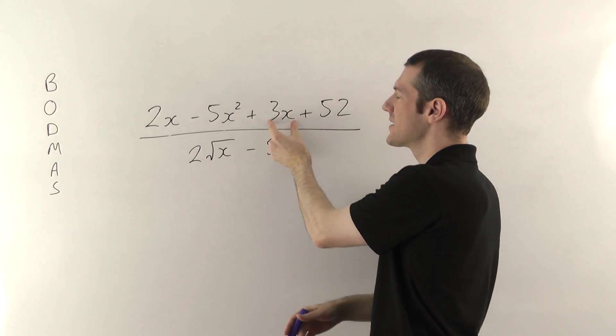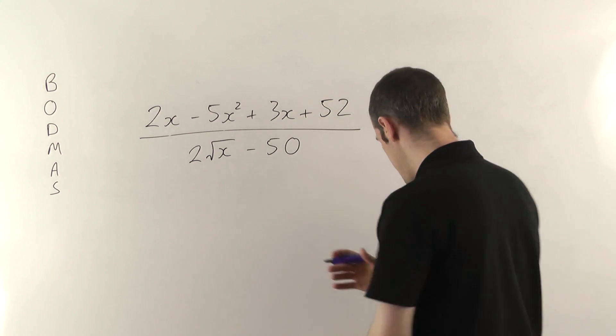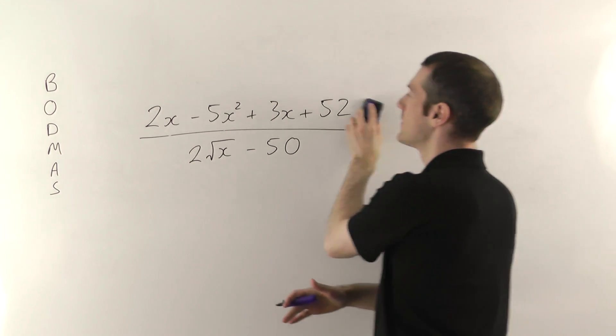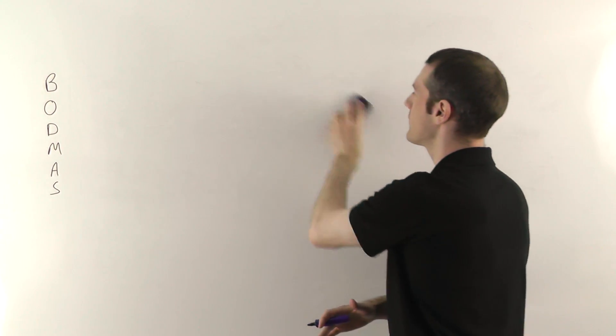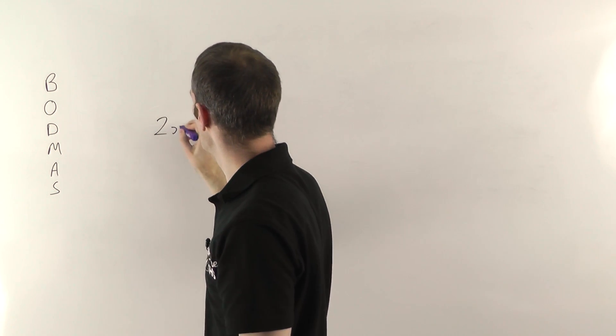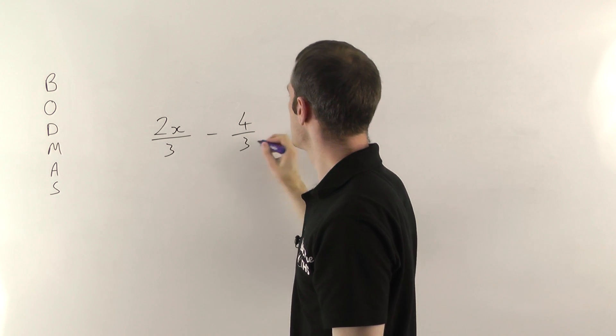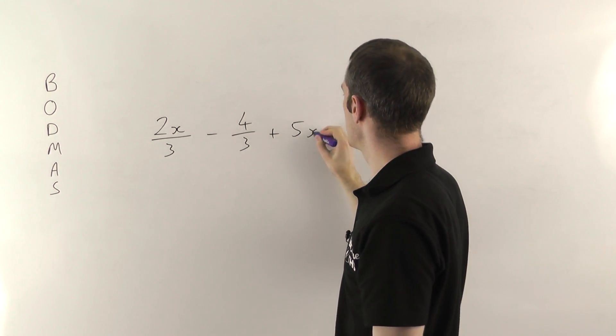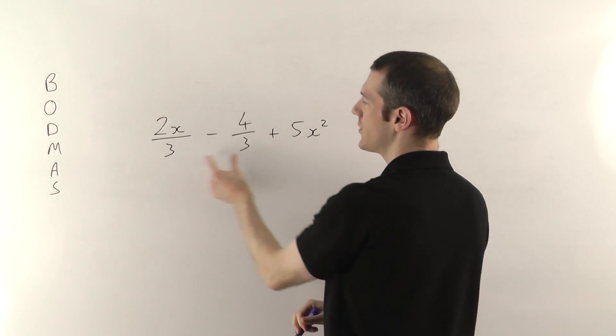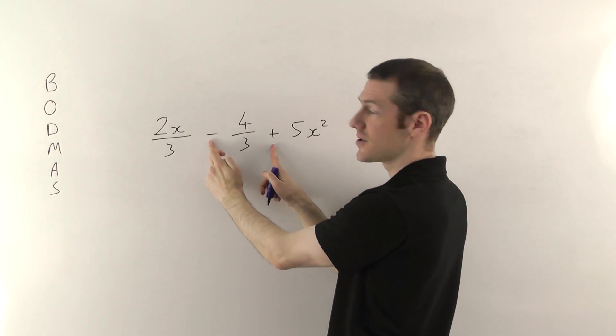So if things are multiplied together, then that's one term. Again, if you've got things that have been divided, if we throw a couple of fractions into the mix, if we had 2x over 3 minus 4 thirds plus 5x squared, then you've got 1, 2, 3 different terms here. As I say, these separate the terms.